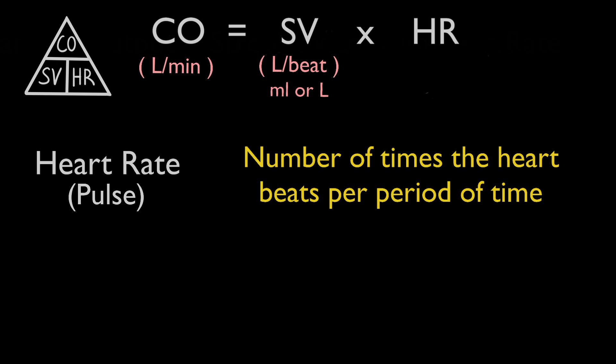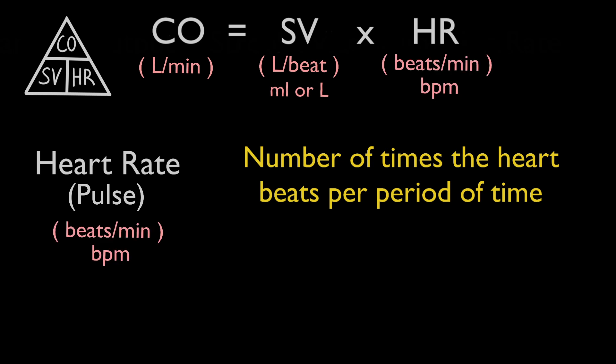Heart rate, also called the pulse, is the number of times the heart beats per period of time. It is expressed as beats per minute, or bpm. The normal resting heart rate for adults is typically between 60 and 100 beats per minute, but it can vary depending on age, sex, fitness level, and other factors.